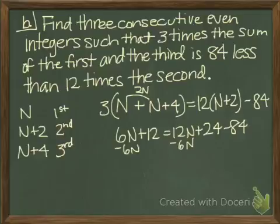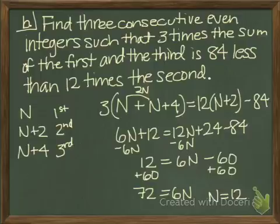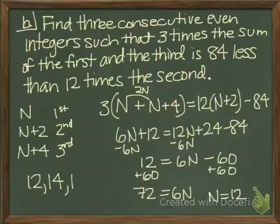Now we'll subtract 6N from both sides. We get 12 is equal to 6N minus 60. Add 60 to both sides. 72 is equal to 6N, so N is equal to 12. But we need 3 consecutive even integers. So those are 12, 14, and 16.